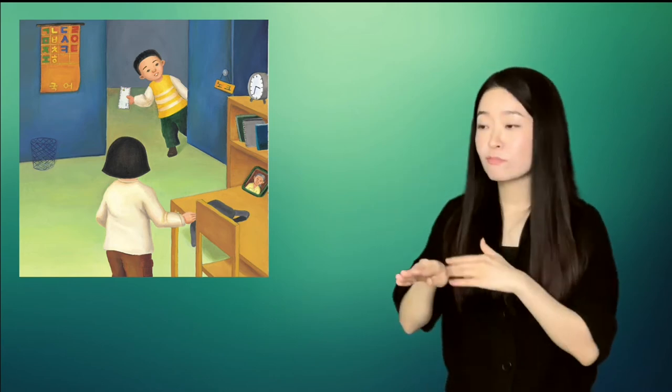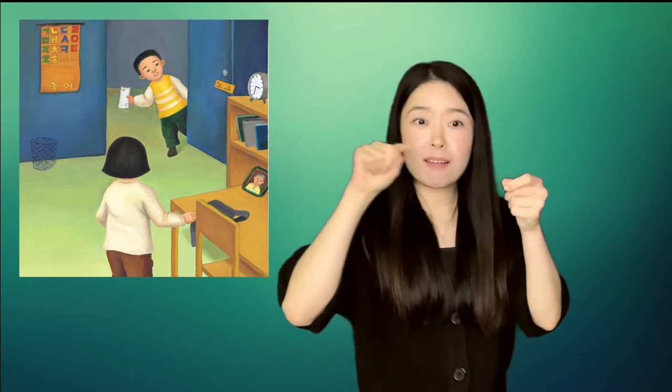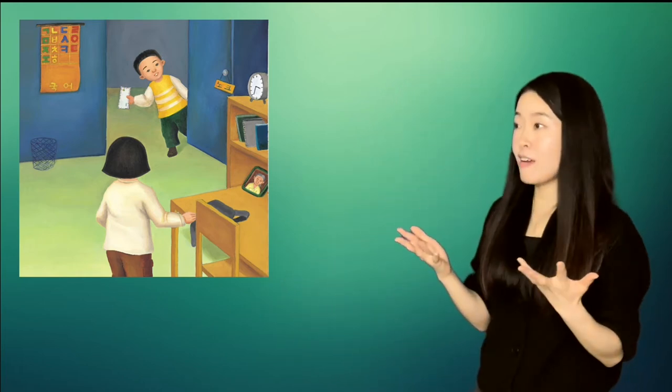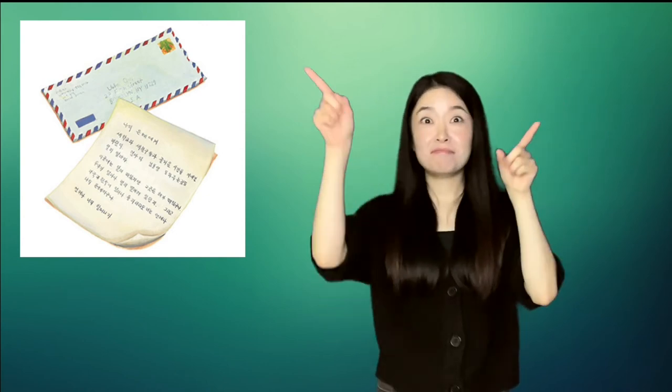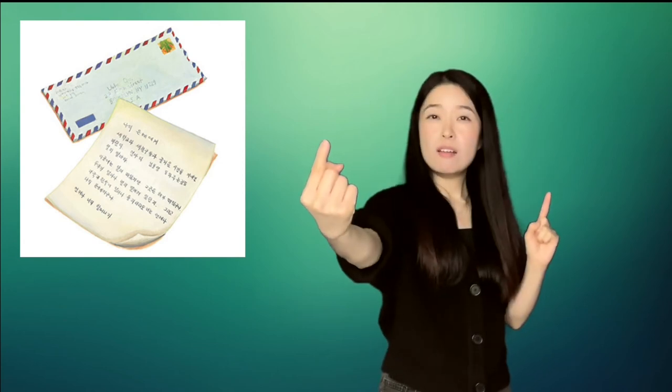When Unhei got home from school that day, her little brother ran to give her a letter. It was from her grandma. She opened it quickly and read: To my Unhei, I hope you are enjoying your new school and new friends. Be sure to help your mother and your little brother. Here, the moon is up, but there, the sun is up. No matter how far apart we are, and no matter how different America is from Korea, you will always be my Unhei. Your grandma forever.